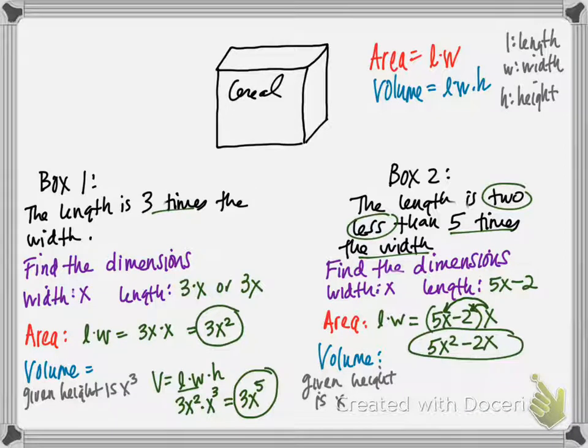All right, the height here is x to the third. Sorry, that got erased. So I have to find the volume. So again, volume is length times width times height. So length times width, we already did that. It's right here, 5x squared minus 2x.